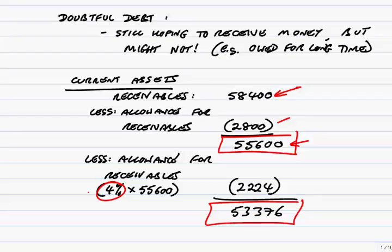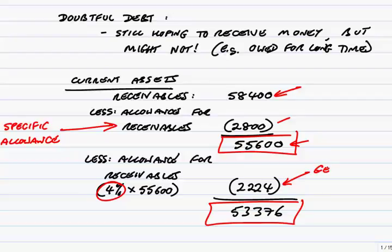We've deducted this allowance for two different reasons. In the first case, we knew one specific receivable was a problem — Z — so that $2,800 is called a specific allowance. Whereas in the second case, the $2,224 didn't relate to any particular person or company — it was just 4% because we know somebody on average won't pay. We call that a general allowance.